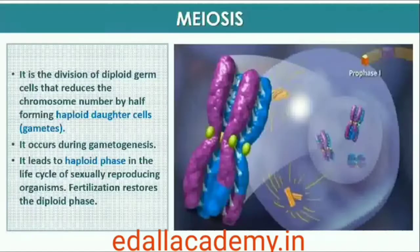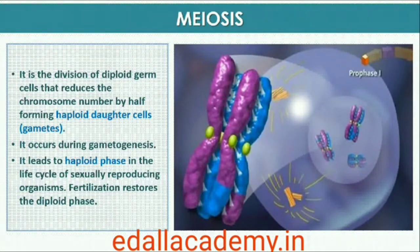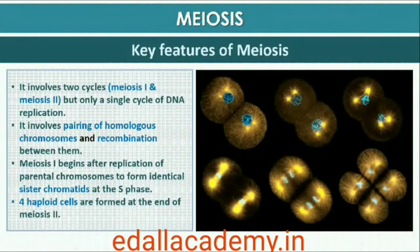The production of offspring by sexual reproduction includes the fusion of two gametes, each with a complete haploid set of chromosomes. Gametes are formed from specialized diploid cells. This specialized kind of cell division that reduces the chromosome number by half results in the production of haploid daughter cells. This kind of division is called meiosis. Meiosis ensures the production of the haploid phase in the life cycle of sexually reproducing organisms, whereas fertilization restores the diploid phase. Meiosis occurs during gametogenesis in plants and animals, leading to the formation of haploid gametes.